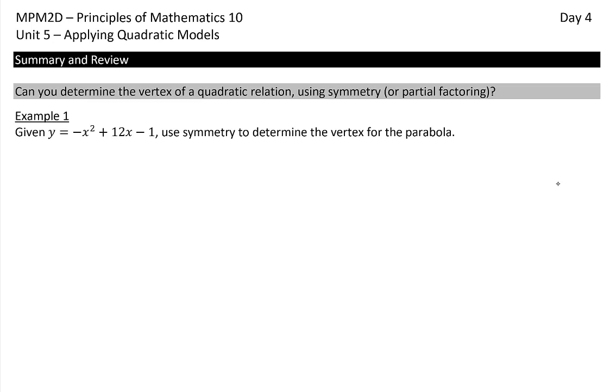So the first question is, can you determine the vertex of a quadratic relation using symmetry, also known as partial factoring? So for our first example, you are given y equals negative x squared plus 12x minus 1. Use symmetry to determine the vertex for the parabola.